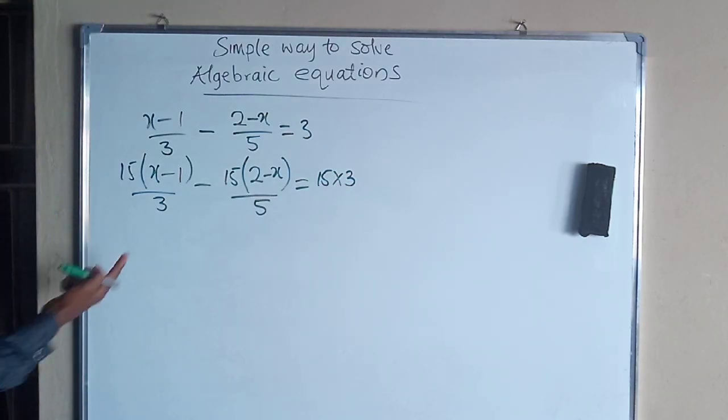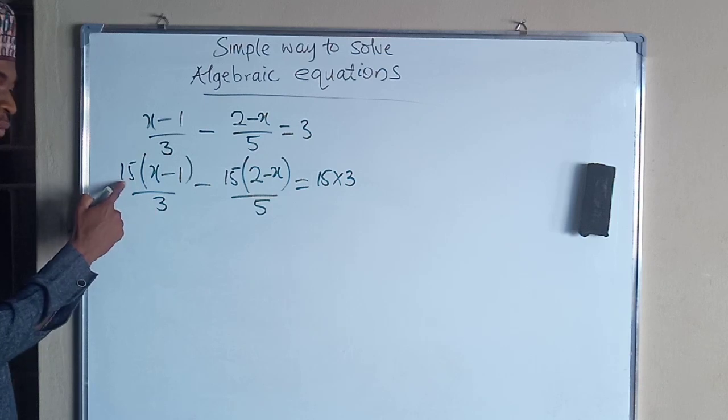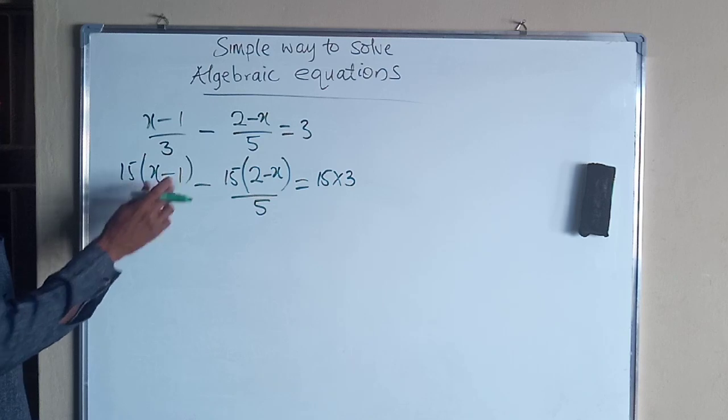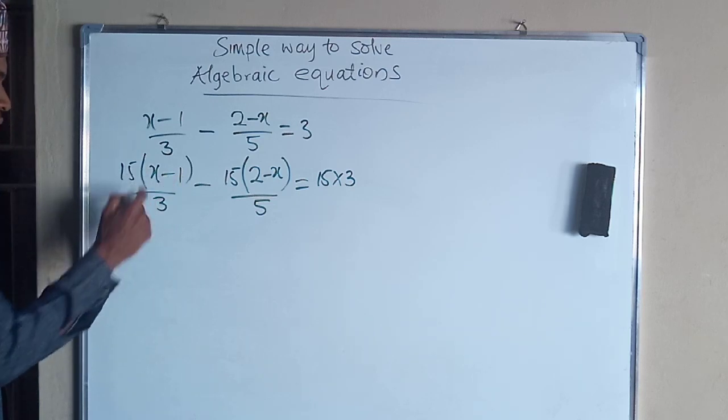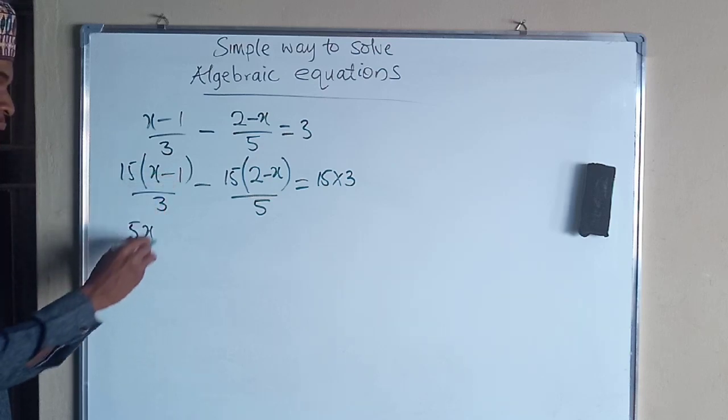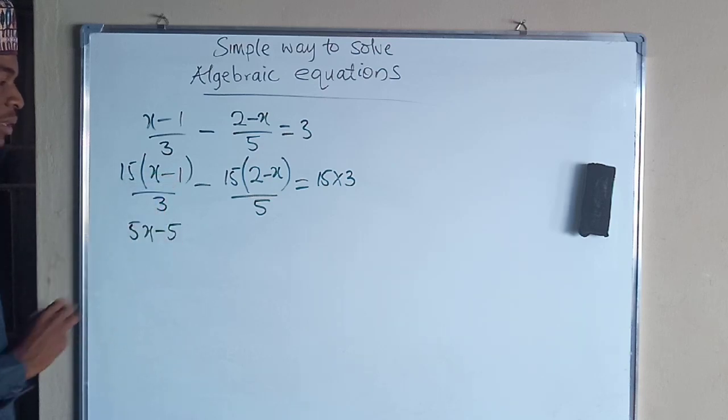We go further. We know that 3 can go into 15 five times. Then that 5 we are going to multiply x minus 1. So 5 times x is going to give you 5x. Then 5 times negative 1 is negative 5.